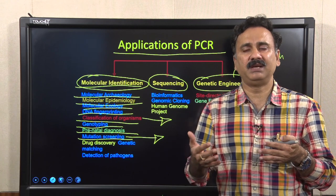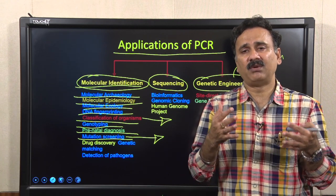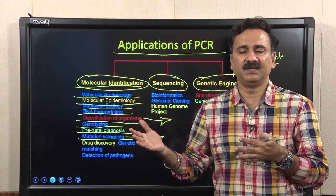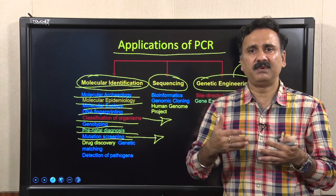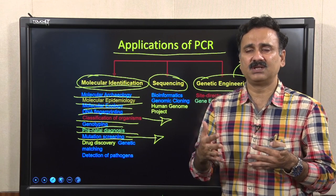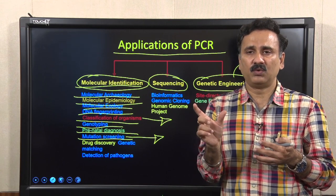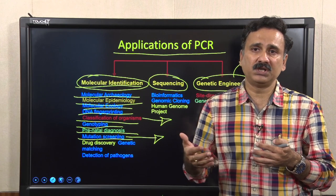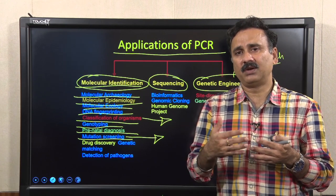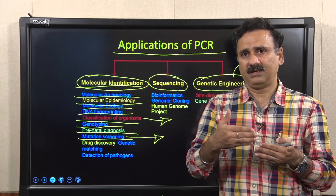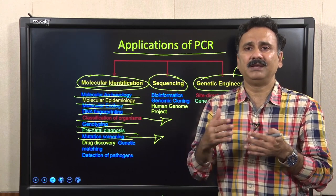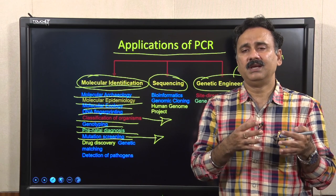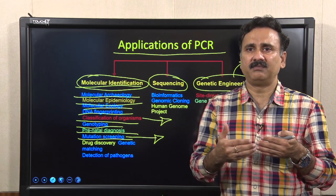Mutation screening is an area where PCR can tell you whether a particular type of mutation is persisting in a gene. This has wide application in diagnostics — if a mutation is linked to a particular disease phenotype, you can design PCR primers that will only give an amplified product when the mutation is present. If there is no mutation, there will be no amplified product. This is how you can identify mutations in specific genes and determine whether a cell carries a mutated version.